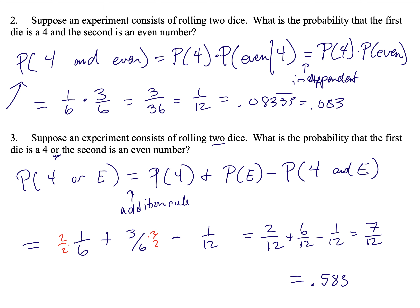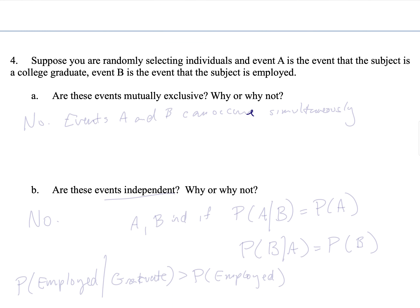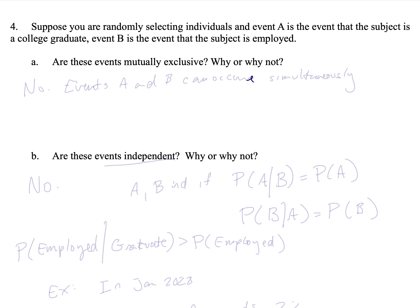Suppose you are randomly selecting individuals, event A is that the subject is a college graduate, and event B is that the subject is employed — for one individual. Are these mutually exclusive? No, they are not mutually exclusive. Events A and B can occur simultaneously — a person can be both a college graduate and employed at the same time. Because both events can occur at the same time, these events are not mutually exclusive.